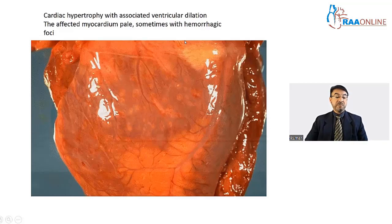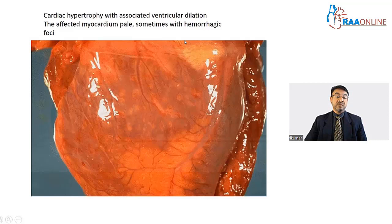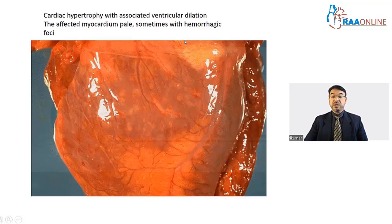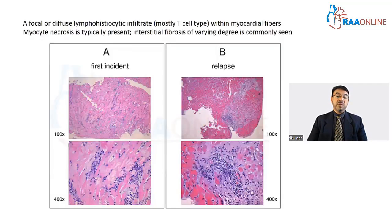In about 12 percent of sudden deaths in young adults, post-mortem data shows the cause is myocarditis. Clinical trials such as the Myocarditis Treatment Trial report that the incidence of biopsy-proven myocarditis in unexplained heart failure is up to about 10 percent. On gross examination there is ventricular dilation and the myocardium is pale with a hemorrhagic profile.